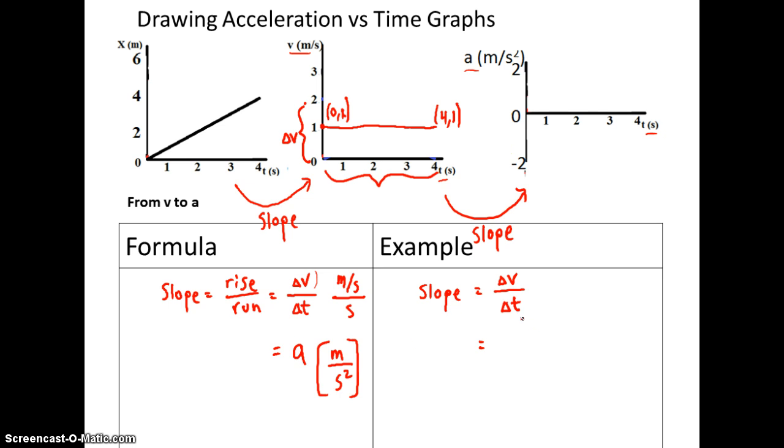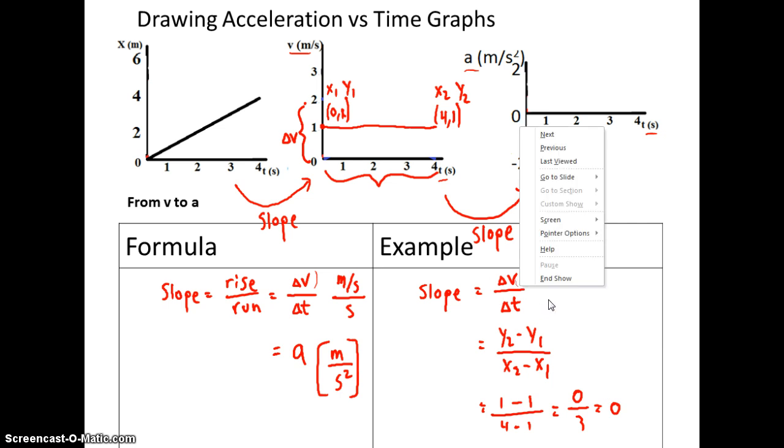Using our slope equation, y2 minus y1 all over x2 minus x1. So, y2 minus y1 would be 1 minus 1 all over 4 minus 1. 0 over 3. 0. This is saying, my acceleration is going to be 0.